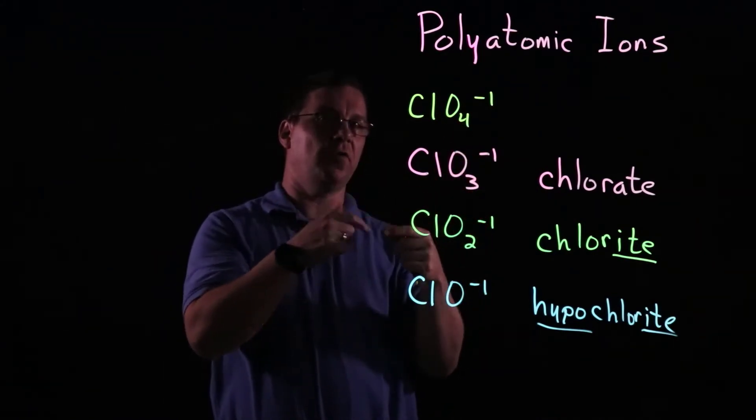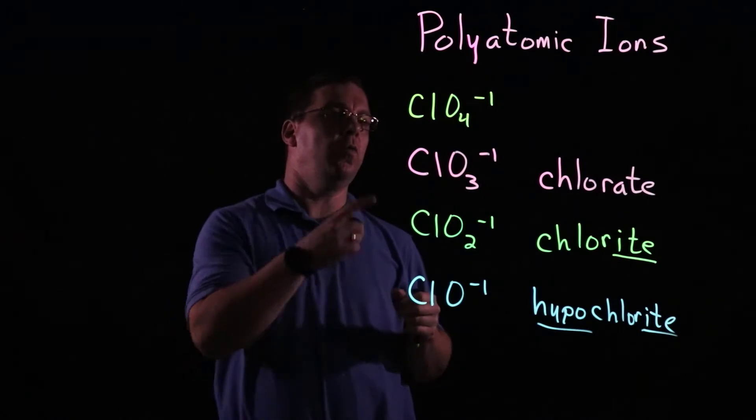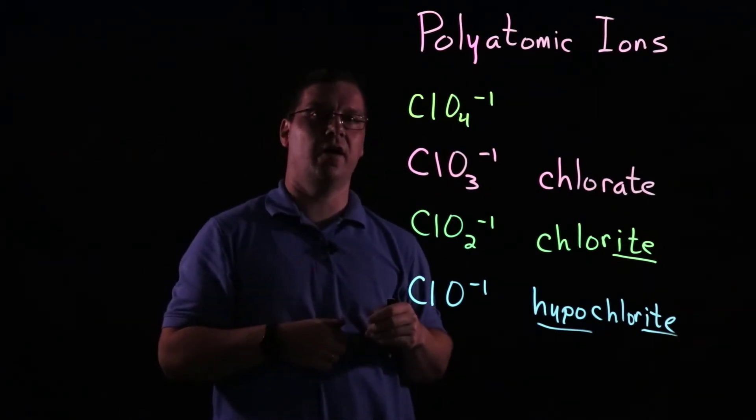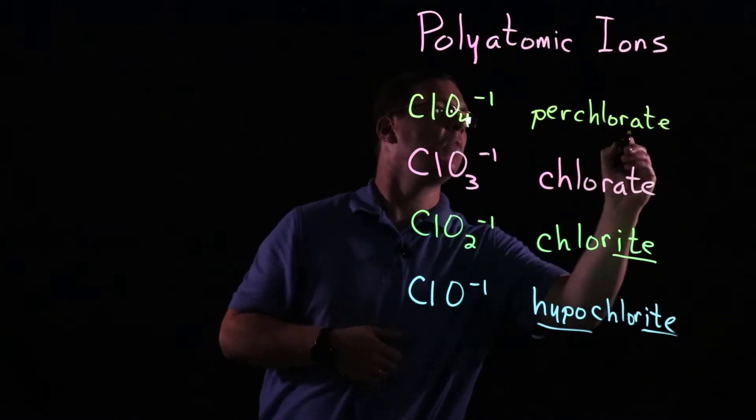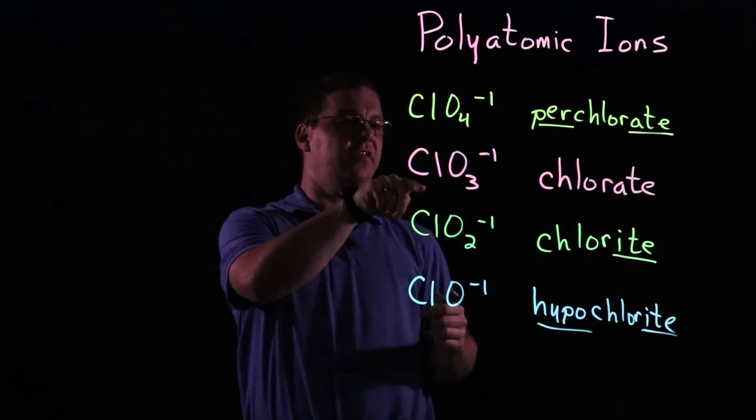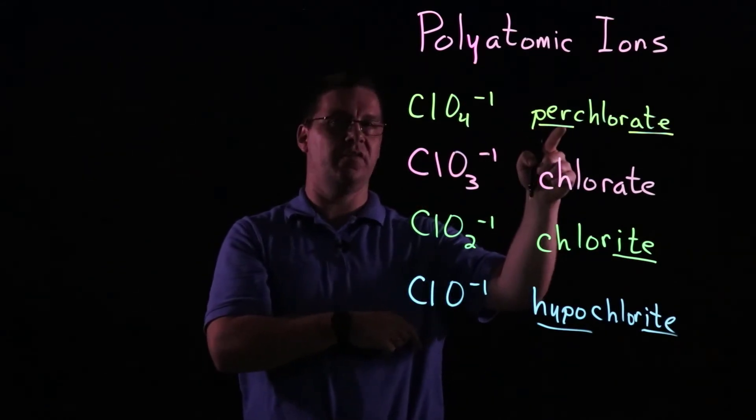But again, the formula is different, so the name is going to have to be different as well. And so ClO4 with a minus one charge is known as the perchlorate ion. And so we see the ATE ending. We know we're at least at ClO3 in this case. But now we have the per prefix.